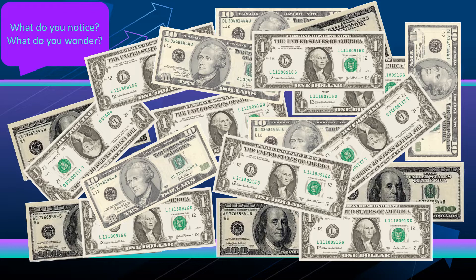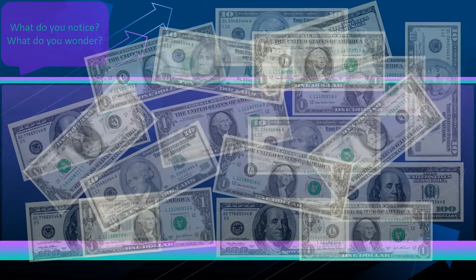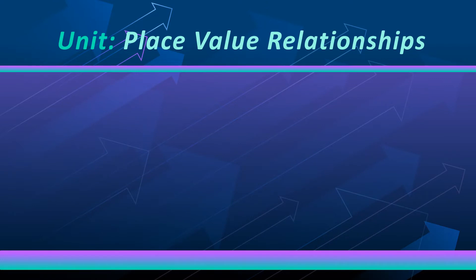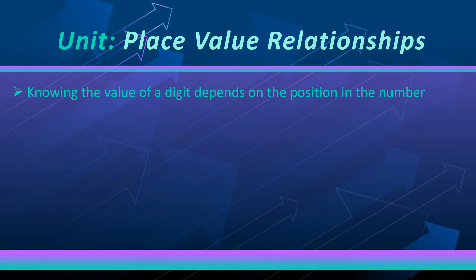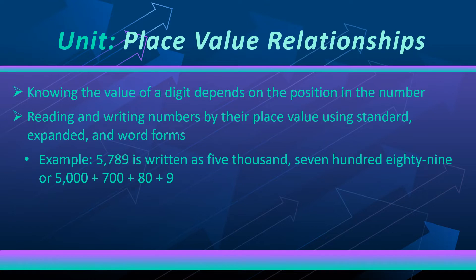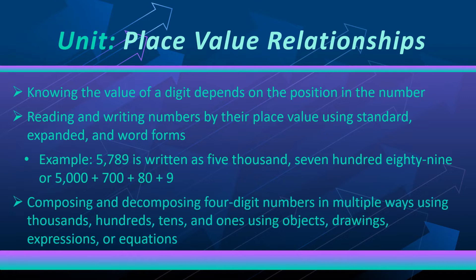In this third grade unit, students will explore place value relationships and how to compose and decompose numbers using place values. This unit of study will encompass the following key learning goals: knowing the value of a digit depends on its position; being able to read and write numbers by place value using standard, expanded, and word form; and being able to compose and decompose up to four digit numbers in multiple ways using thousands, hundreds, tens, and ones.